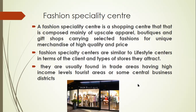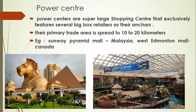The last type for today is power center. Power centers are super large shopping centers — like one compulsory in the whole of Bangalore, something like that. It is exclusively given for anchor stores, so you can find only very, very big stores. They have a primary trade area of 10 to 20 kilometers — imagine a mall being that huge. Two examples are Sunway Pyramid Mall on the left and West Edmonton Mall on the right. These are not in India — they are in Malaysia and Canada. Such malls are called power centers.